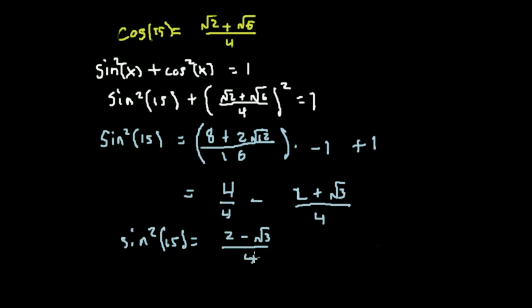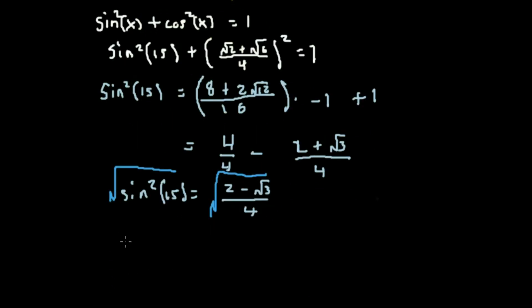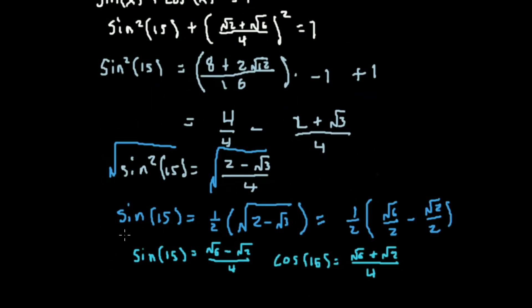Using the process we just did, we can solve for a and b and figure out that the sine of 15 degrees is the square root of 6 minus the square root of 2 divided by 4. And again, the cosine of 15 degrees is equal to the square root of 6 plus the square root of 2 divided by 4.